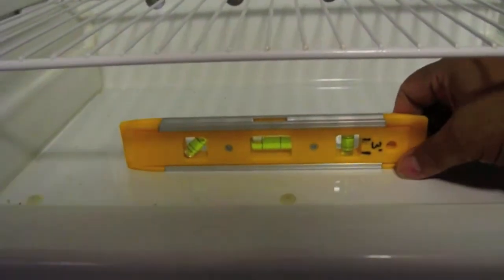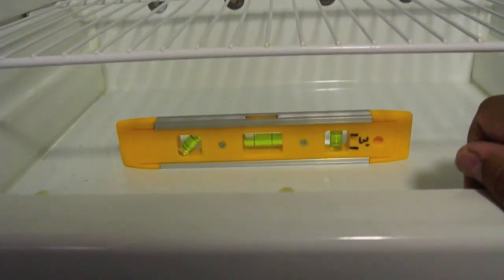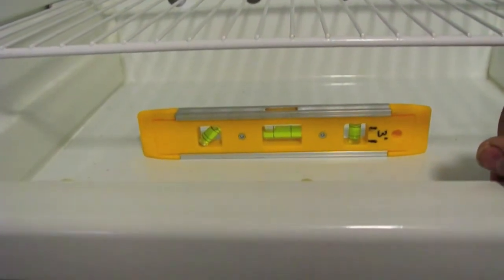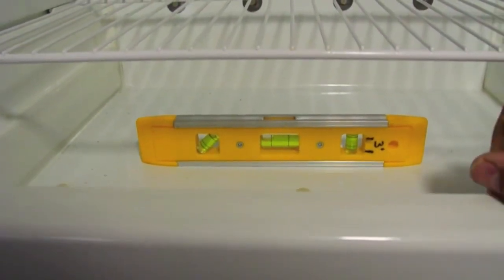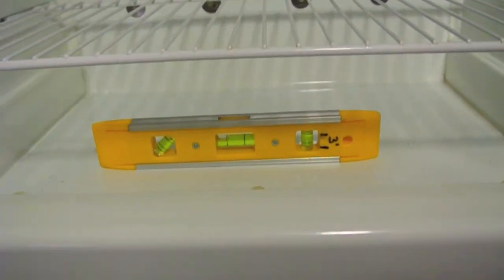When I put this spirit level in here I see that the refrigerator is about 3 degrees front to back, which is about the maximum it can tolerate. So in reality I don't want to start the refrigerator up when it's in this position.